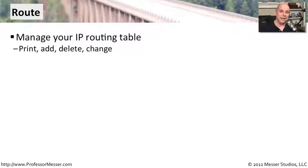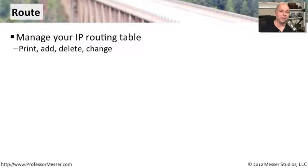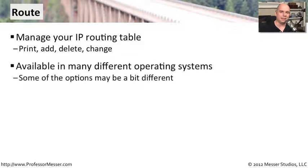A server with multiple interfaces has the same question. On most systems, whether it's a router or an operating system, there's a command that allows you to view the existing routing table. On Windows and Linux devices, this command is the route command. We're going to work with Windows today and look at how to print the routing table, add to it, delete from it, and change the configuration of a device and its routing table.